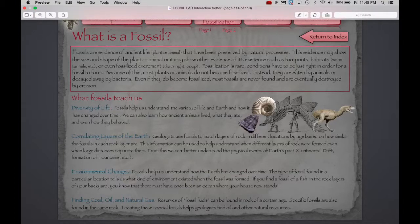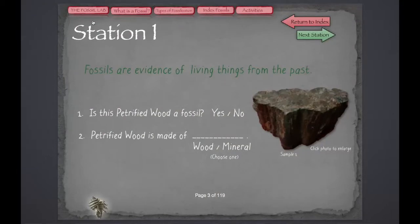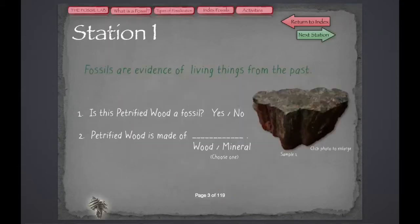Let's go back to the lab, and we'll take a look at Station 1. At Station 1, we see a sample of petrified wood. We can click on the sample to enlarge it for detail, and then we can go back to Station 1 and look at the questions.